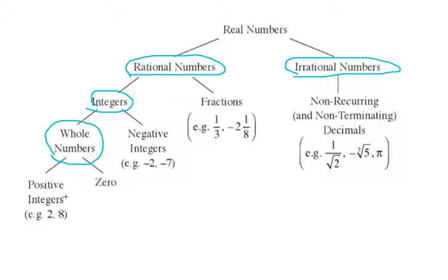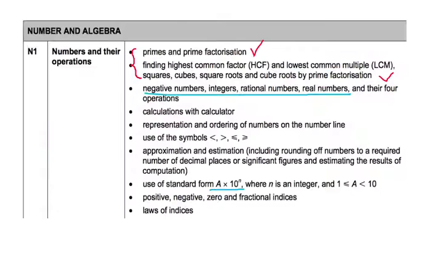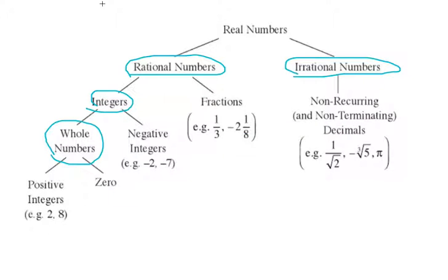Under integers you have the whole numbers, zero to positive numbers, integers. This is part of the number line representation and ordering of numbers on the number line on the syllabus, so you should be able to know that because a lot of questions ask you to list down the prime numbers.